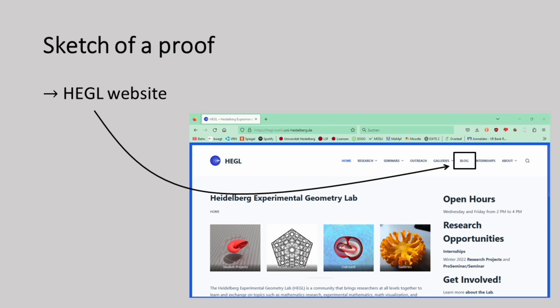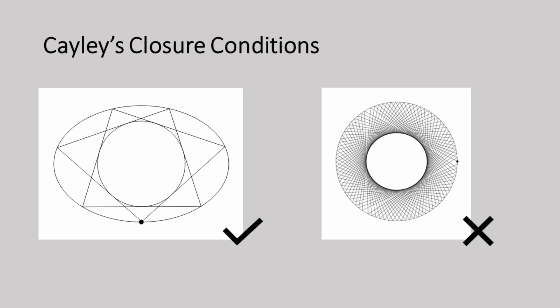A sketch of the proof of Poncelet's Porism can be found in the blog post accompanying this video. While Poncelet's Porism tells us that if a polygon exists, then it always exists, it does not give us any information on when such polygons exist in the first place.